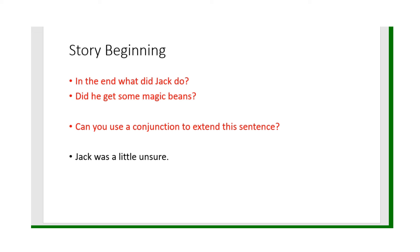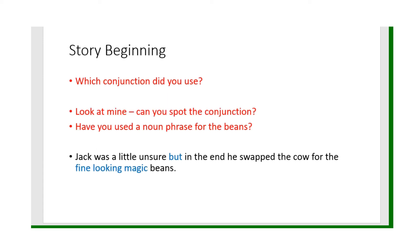In the end, what did Jack do? Can you use a conjunction to extend this sentence? Look — Jack was a little unsure; he wasn't quite certain, was he. But in the end, what did he do? 'But in the end, he swapped the cow for the fine-looking magic beans.' Can you extend your sentence with a conjunction like that?